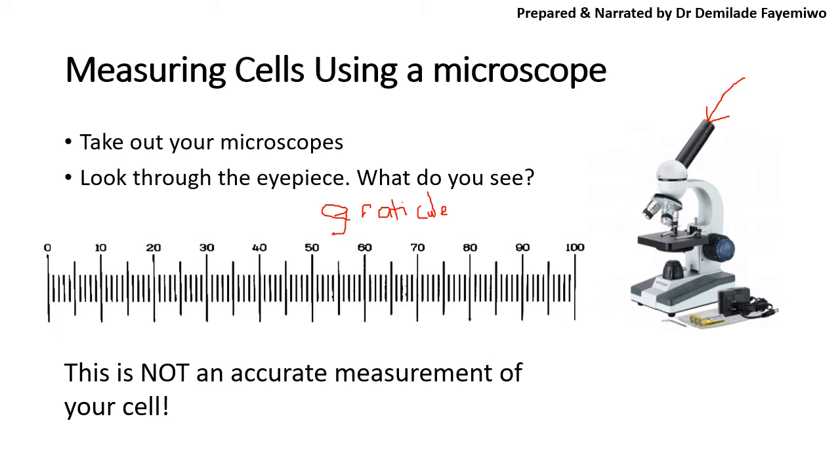So this ruler does not have any unit, and this is why it is not an accurate measurement of your cell. So if you look at this ruler, you might find that whatever specimen you're observing maybe covers from here to there. So you can see that this is 25 units. But the question is, 25 units of what? This ruler doesn't have any units per se. It doesn't have meters or millimeters or micrometers. This is why we discuss measuring cells using a microscope.